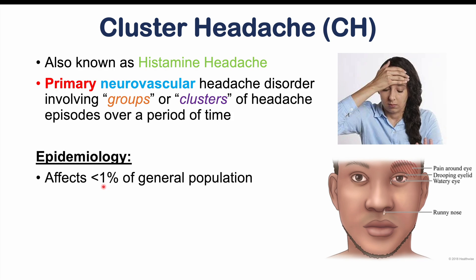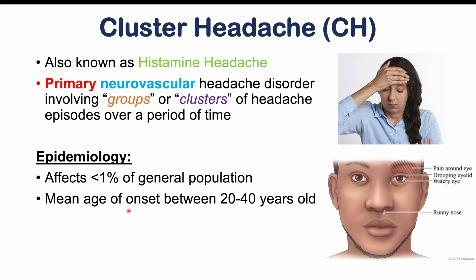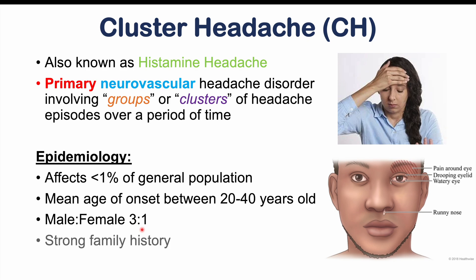Cluster headaches affect less than 1% of the general population — more specifically, around 0.1%. The mean age of onset occurs between 20 to 40 years old. Males outnumber females 3 to 1. And there's a strong family history: if you have a first-degree relative — a parent, sibling, or child — with cluster headaches, you are 14 to 39 times more likely to also have them.